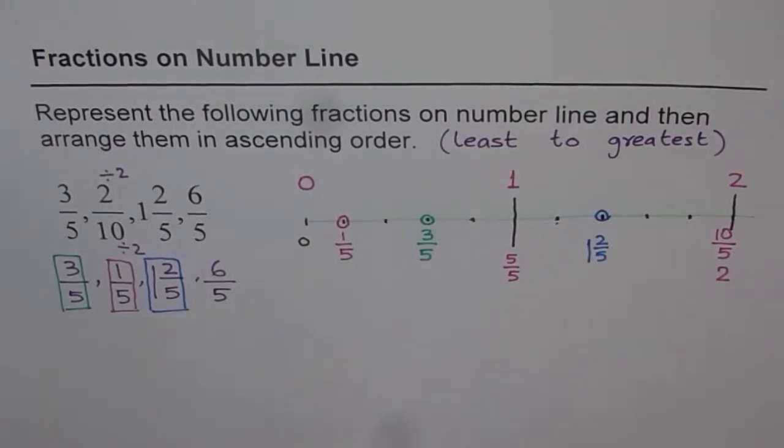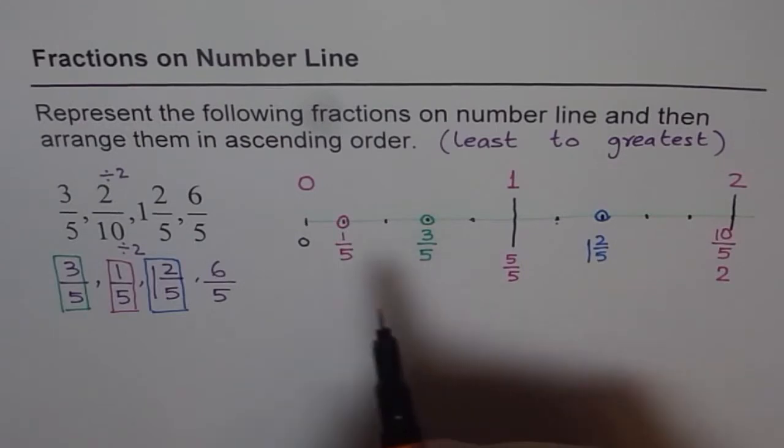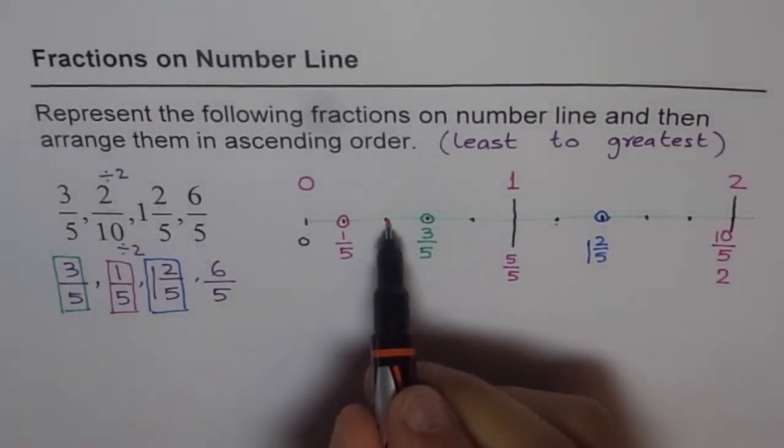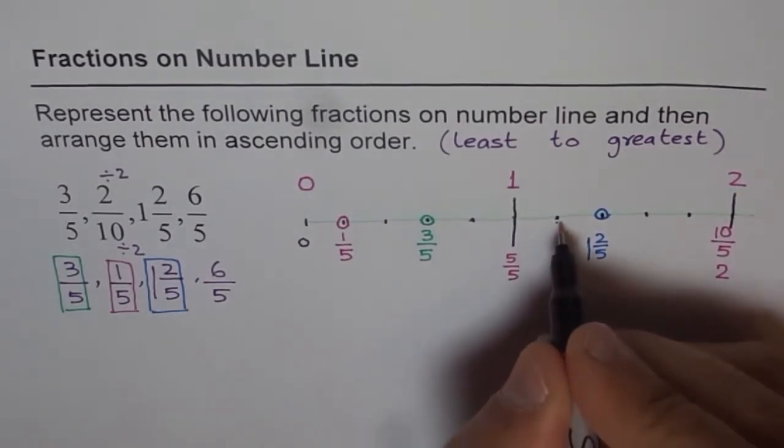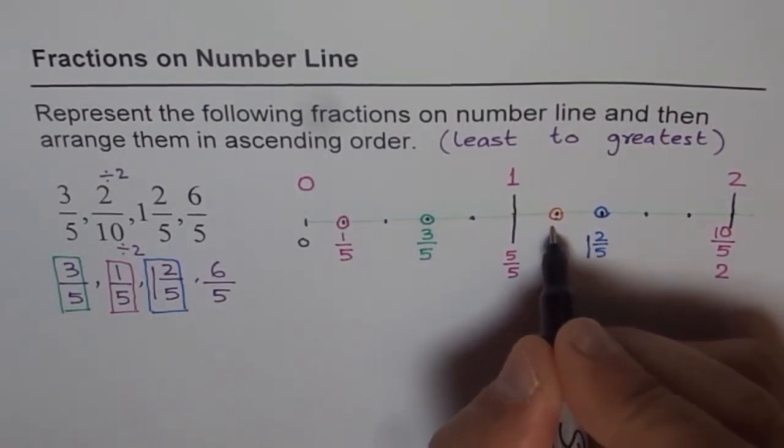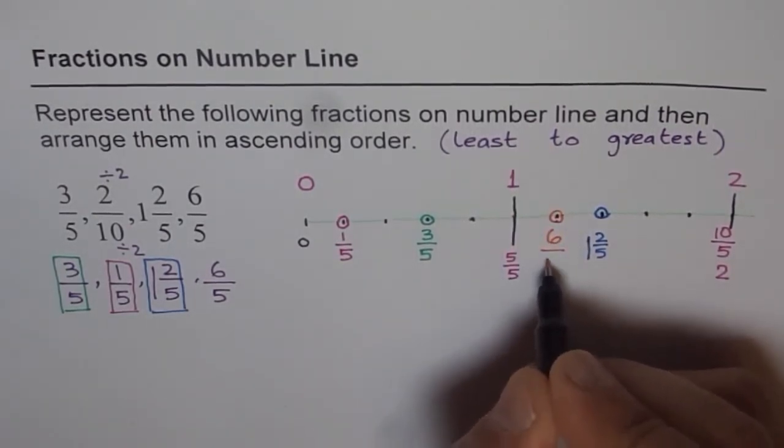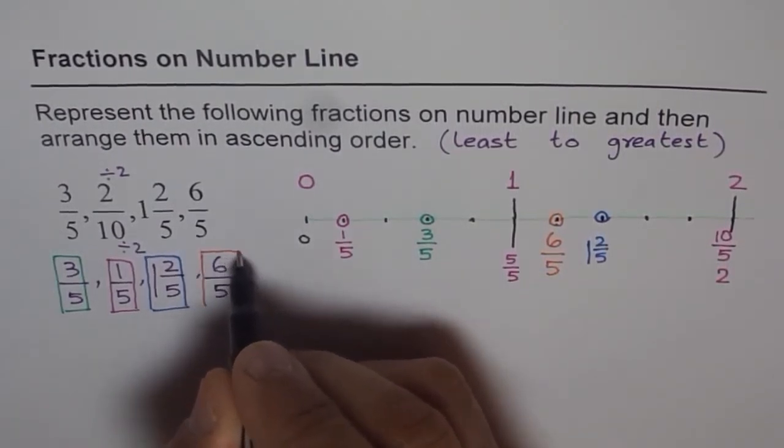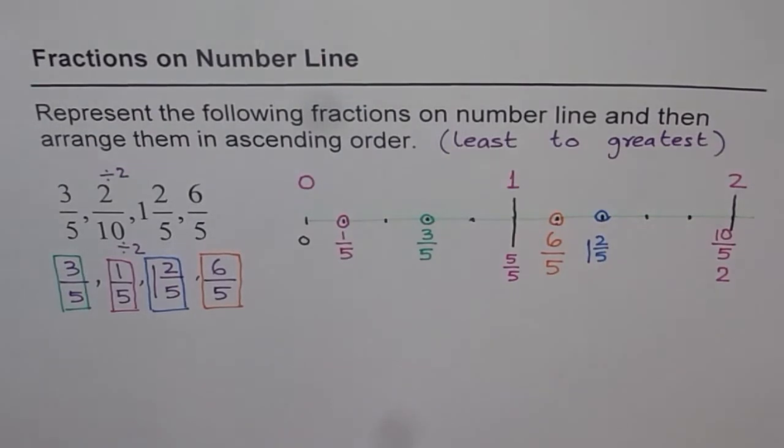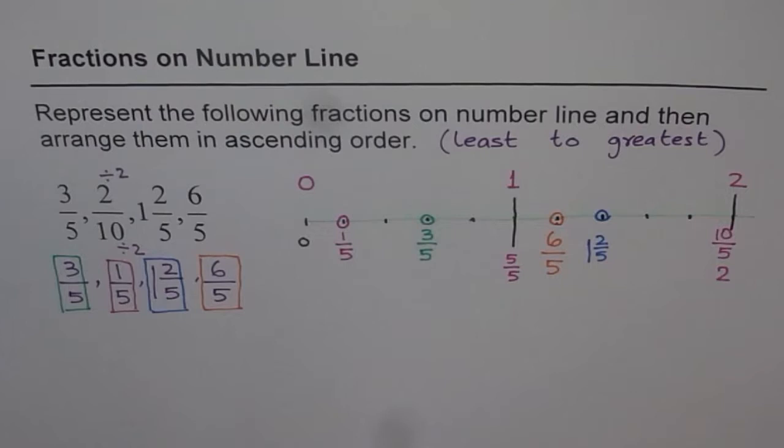Now 6 over 5. 6 over 5. That means 1 out of 5, 2 out of 5, 3 out of 5, 4 out of 5, 5 out of 5 and 6 out of 5. That becomes 6 out of 5 for us. I hope you get it.